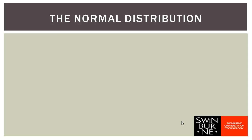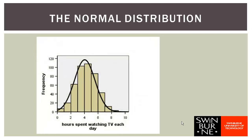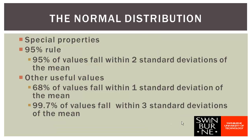There's one more topic to look at this week: the normal distribution. Going back to the distribution of hours spent watching TV each day, we've fitted over that histogram what we call a normal curve. The normal distribution is a symmetric bell-shaped curve, and quite a lot of variables follow it closely. It has some really special properties: 95% of values fall within two standard deviations of the mean, 68% of values fall within one standard deviation of the mean, and 99.7% of values fall within three standard deviations of the mean.